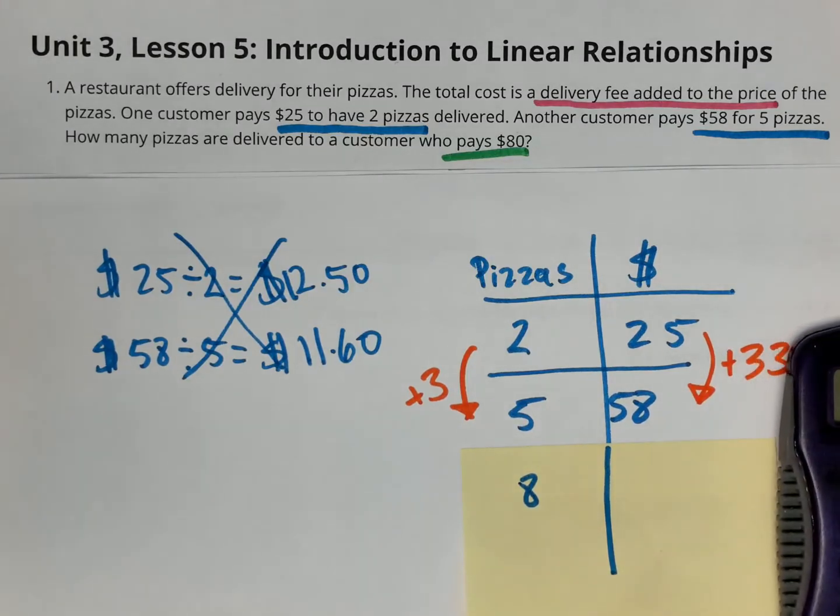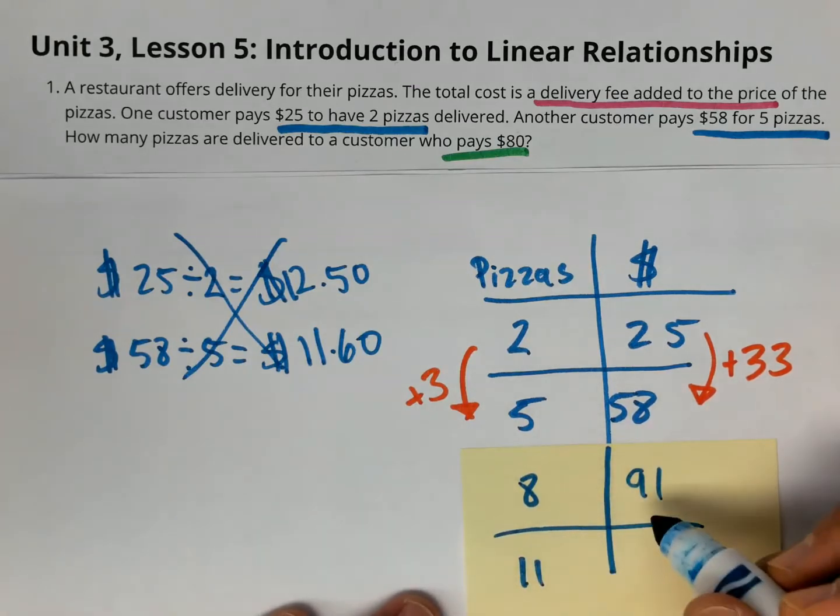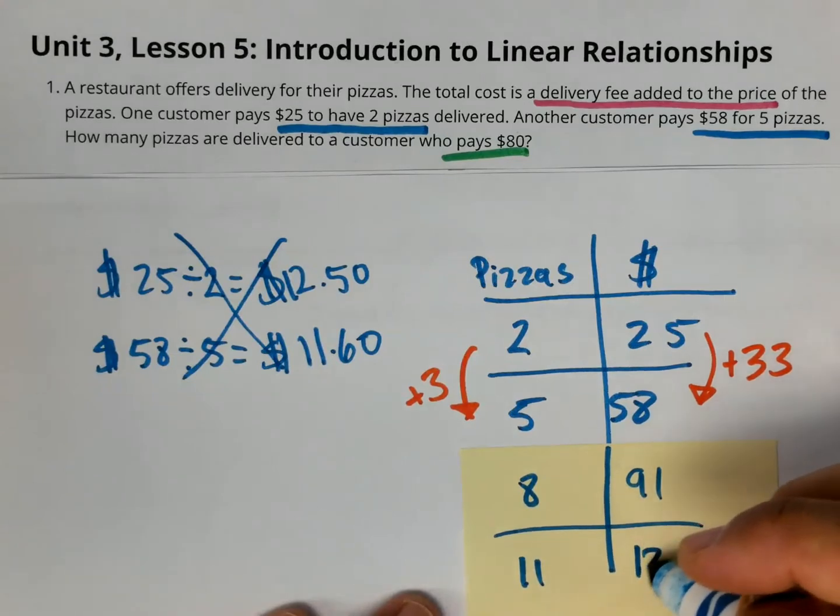58 plus 33 is $91. Okay. And if I add three more pizzas here, that would be 11 pizzas. I would add 33 more here, which is $124.